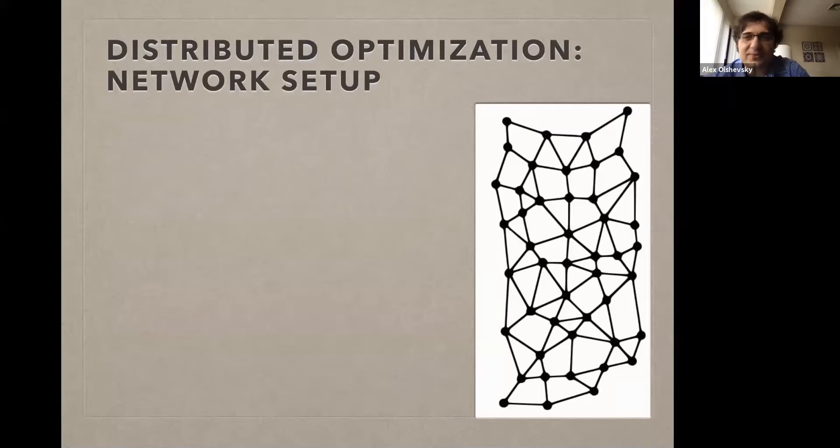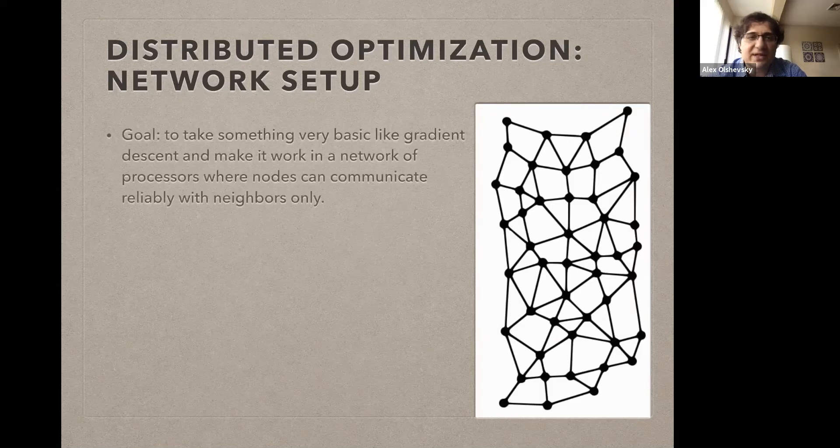Typically in the traditional distributed optimization literature, people are often happy with something that converges. Here, we're not going to be happy with something unless it gives us some kind of speedup. In particular, what we're looking for are results of the form that if you're doing something in a network of N nodes, then it should be N times faster in some way.